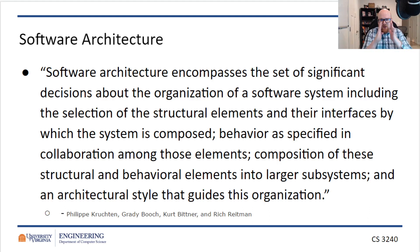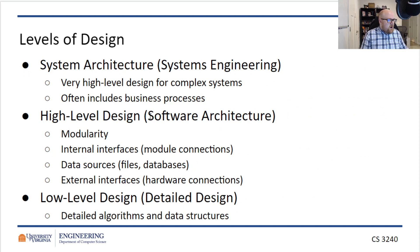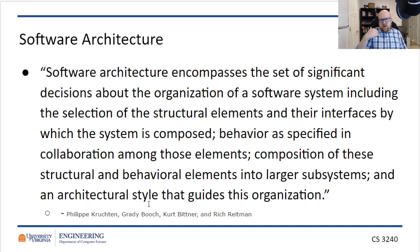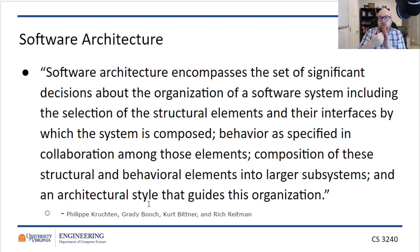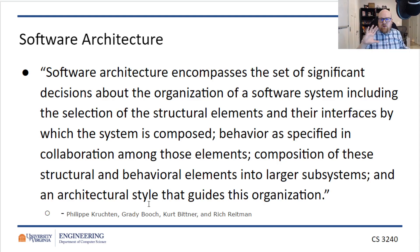Now let's talk about software architecture — that middle level. Software architecture encompasses the set of significant decisions about the organization of the software system, including the selection of the structural elements and their interfaces by which the system is composed. By interfaces, we don't mean user interface like a website or an app. We're talking about the interfaces in terms of how a component is used by other software within the system. The term I would use here is API — what functions does a class have available, what do those functions do, how are they used.